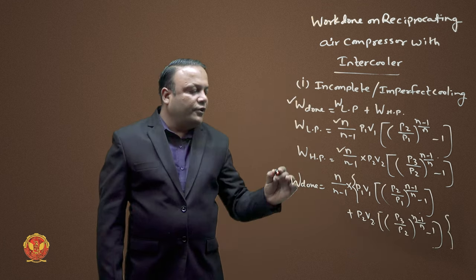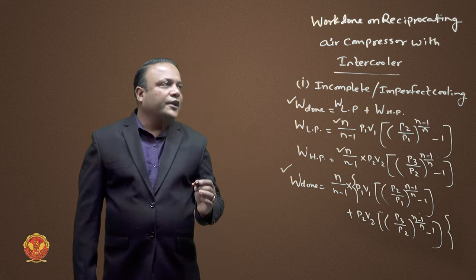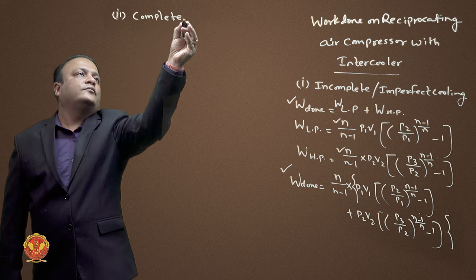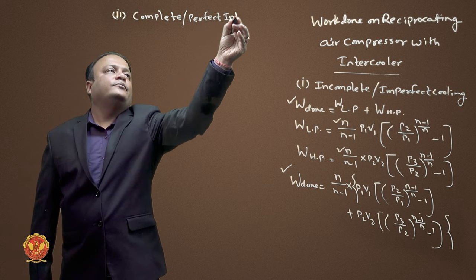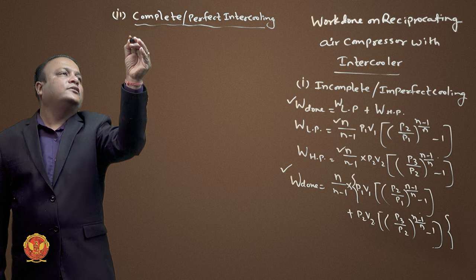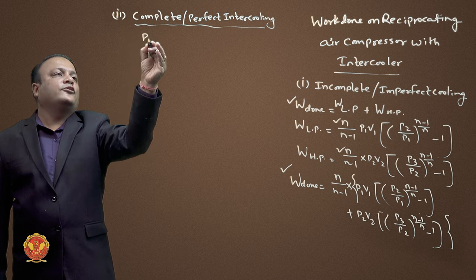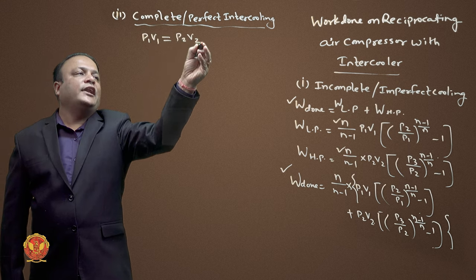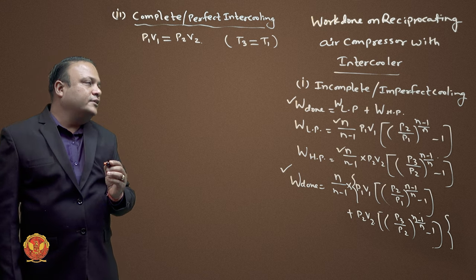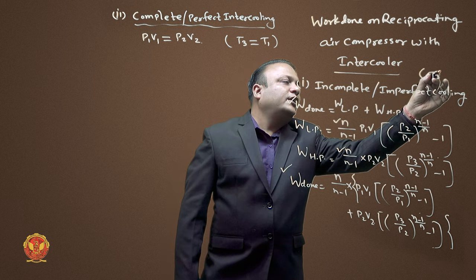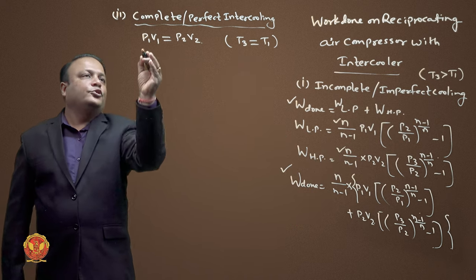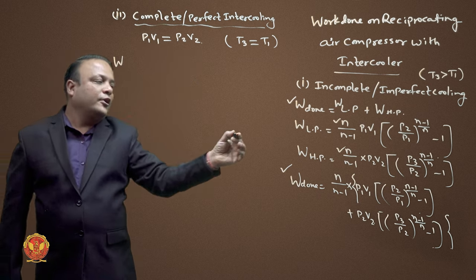Now we consider perfect intercooling. For complete (perfect) intercooling, the rule is P1V1 = P2V2, meaning the temperature leaving the intercooler is equal to T1, the temperature entering the low pressure cylinder. In the imperfect case, the temperature T3 leaving the intercooler was greater than T1 entering the LP cylinder.